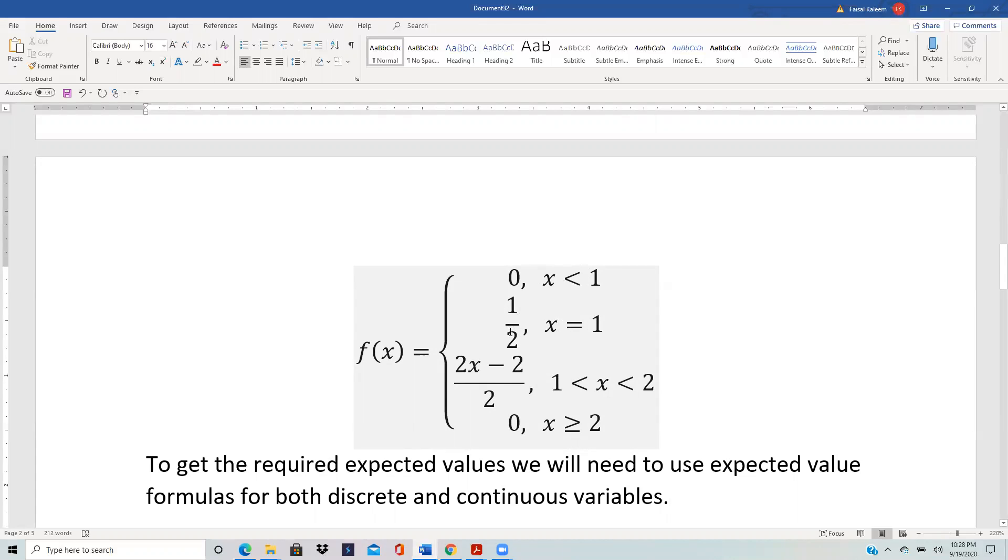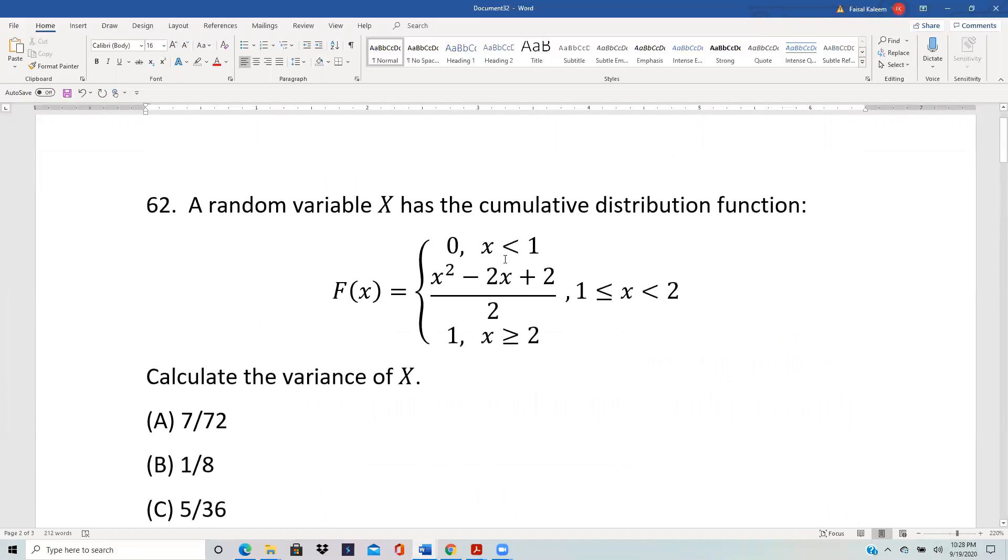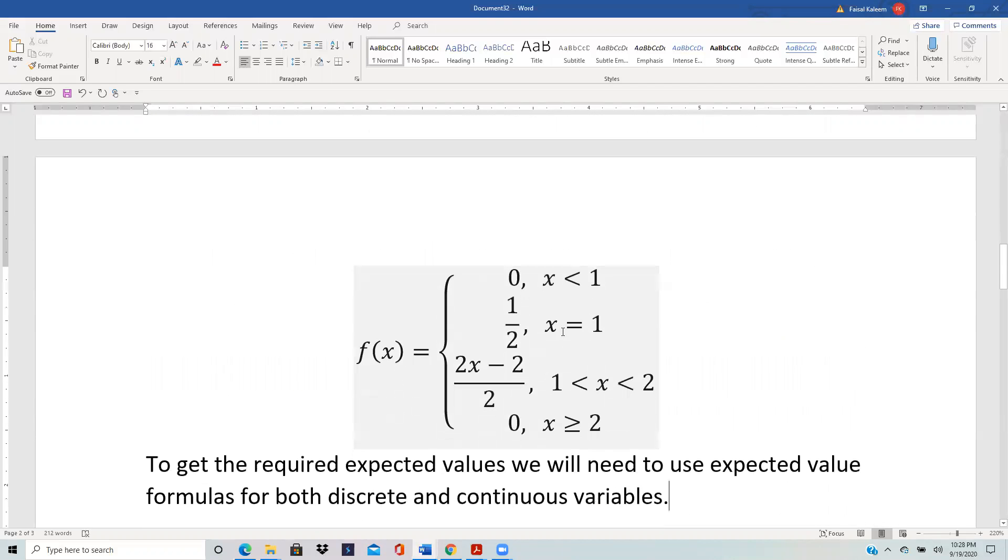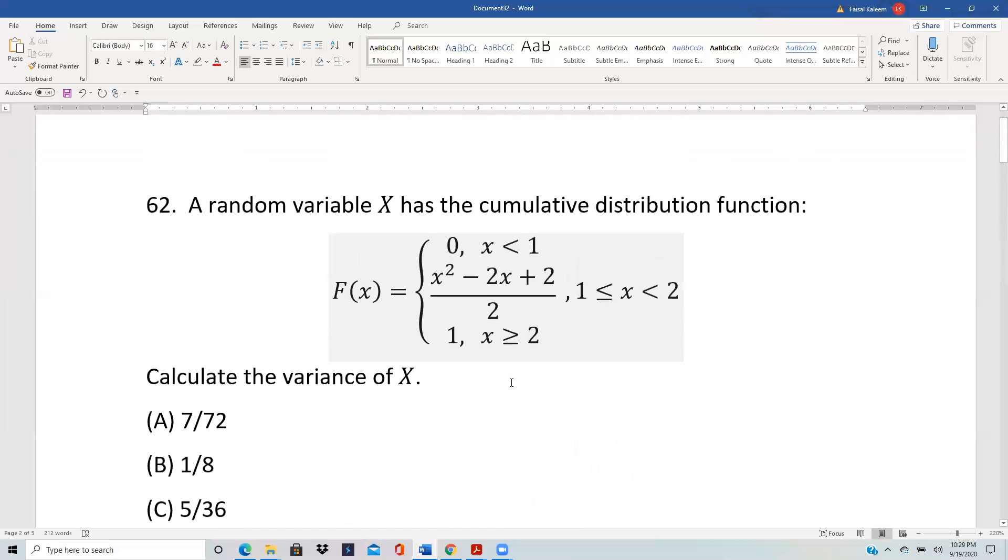And then afterwards we are in this portion and here we just do the normal stuff. We take the derivative of this: (2x - 2)/2 when x is between 1 and 2, not equal to 1 because at 1 we know what happens. And then from 2 onwards we have this part, so we take the derivative of 1 which is zero.